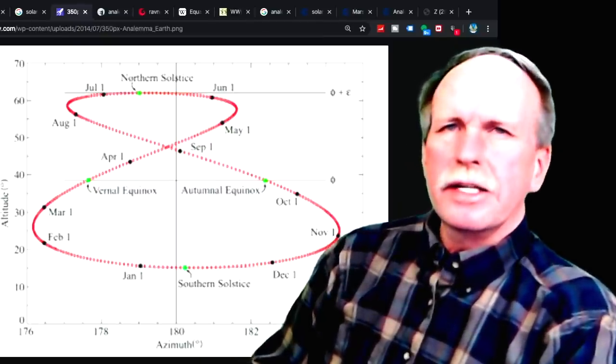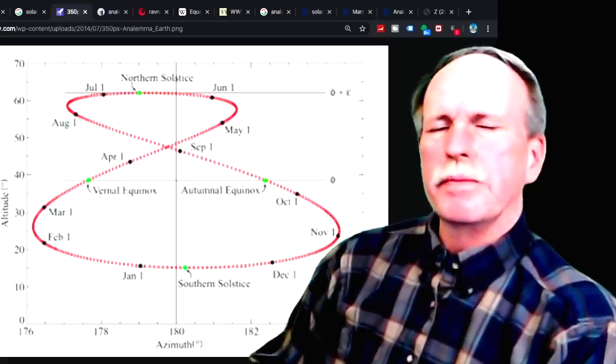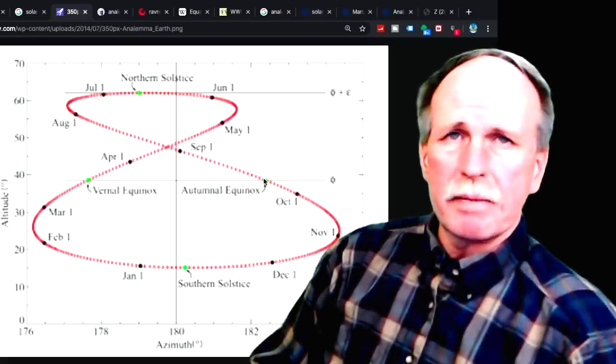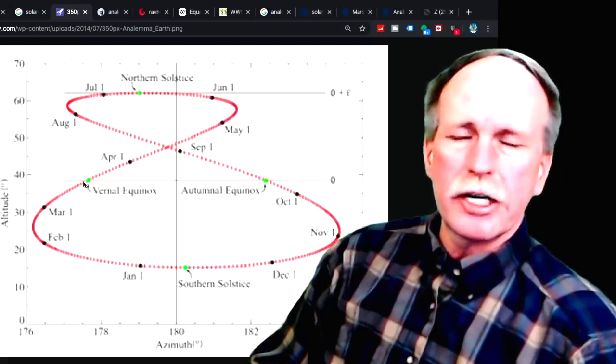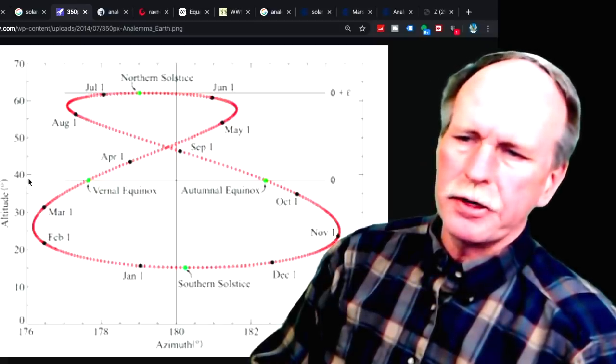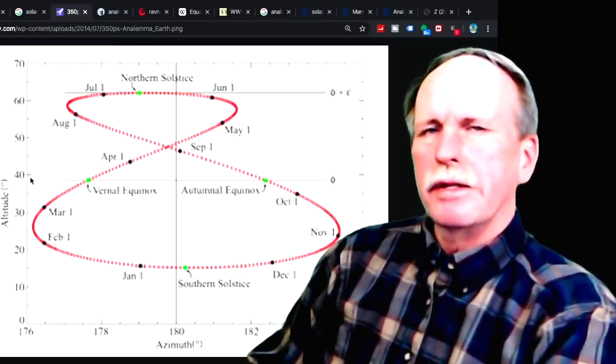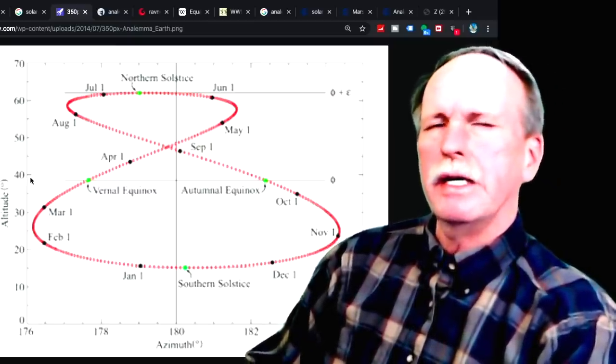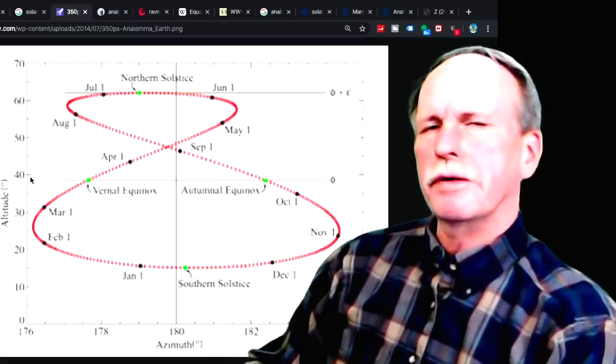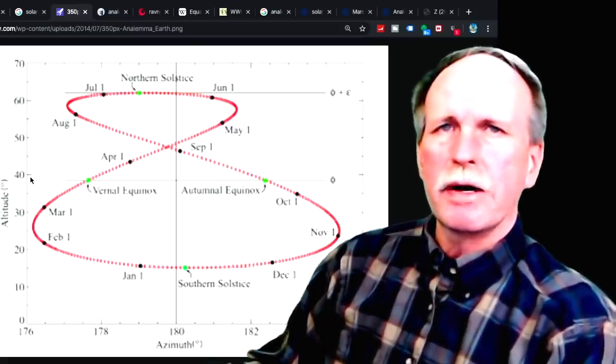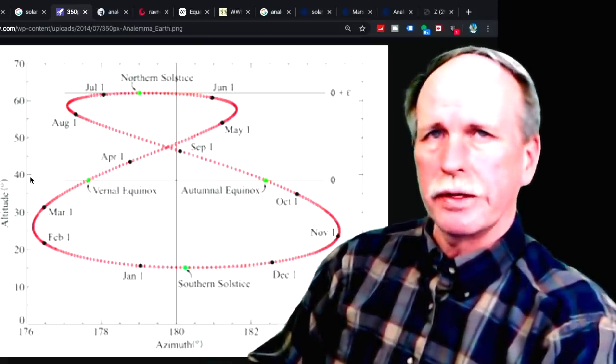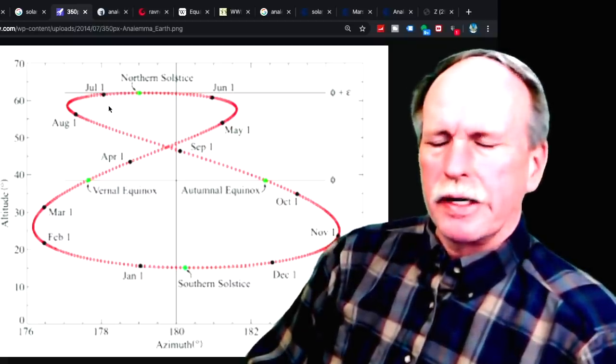Now let's go back to this solar analemma from the Greenwich Observatory in England. Both the September equinox and the March equinox are at about 39 degrees. Subtract 39 degrees from 90, and you find that the latitude of the Greenwich Observatory is approximately 51 degrees north. What else can we tell from the solar analemma?